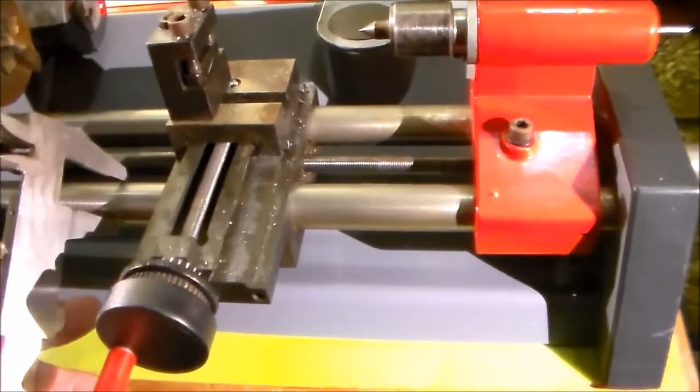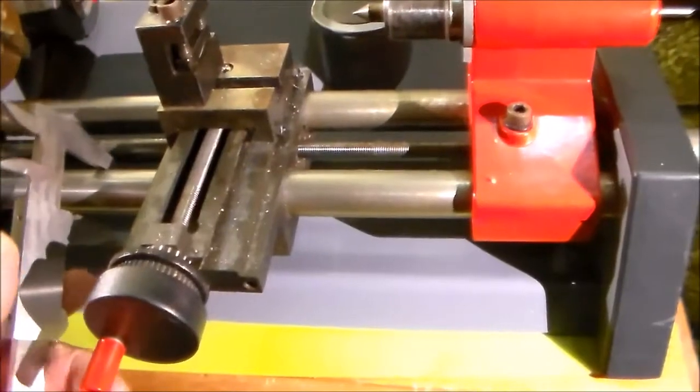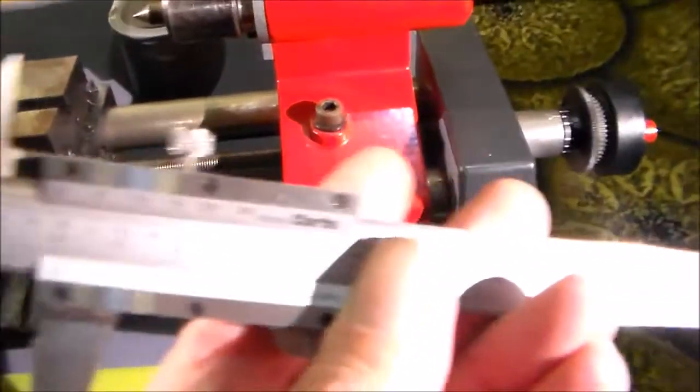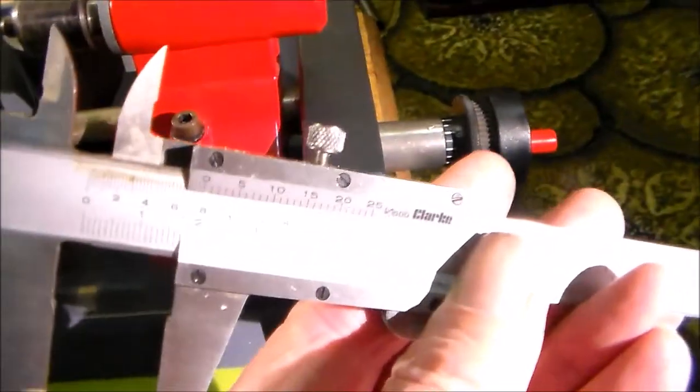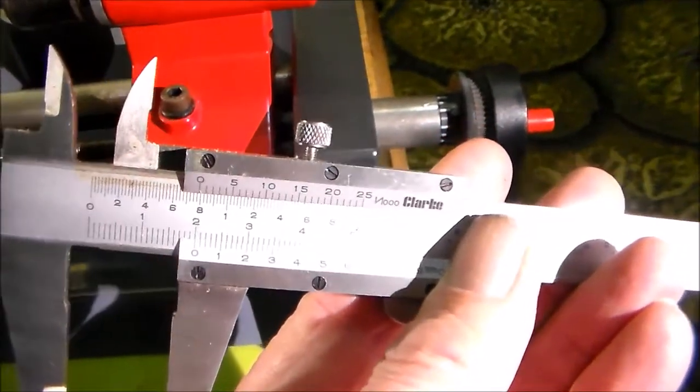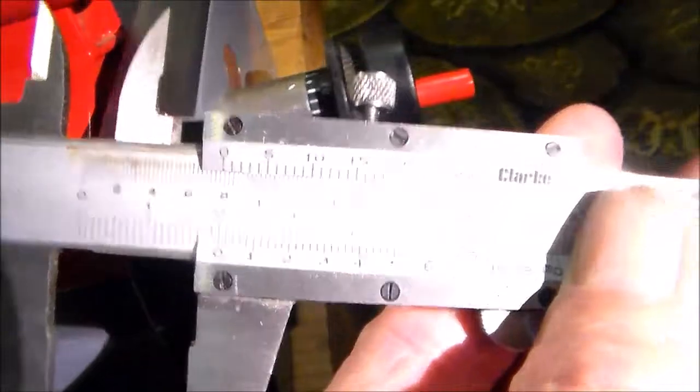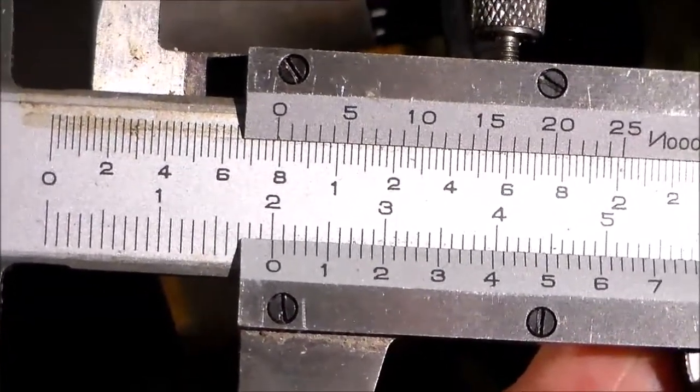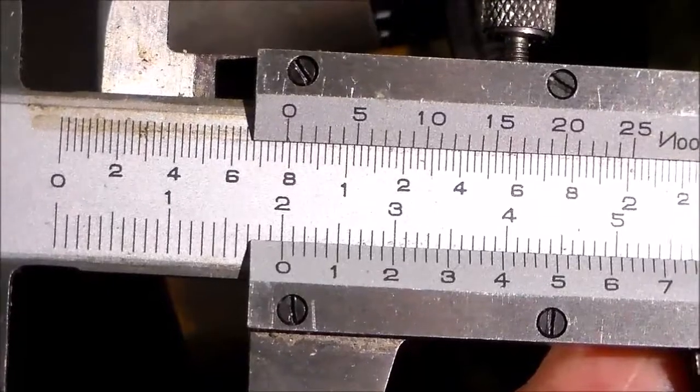These bars which form the bedway for the lathe, let me just pause that and I'll tell you, I think you might be able to see that if it focuses, about two centimeters in diameter, just about spot on two centimeters in diameter.